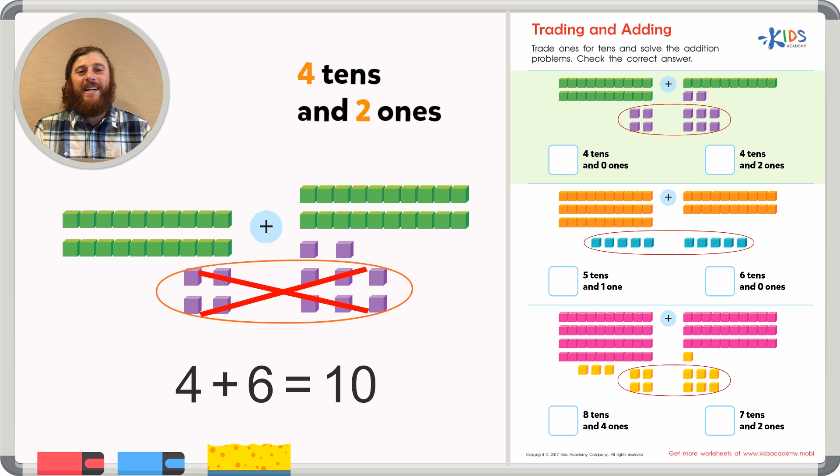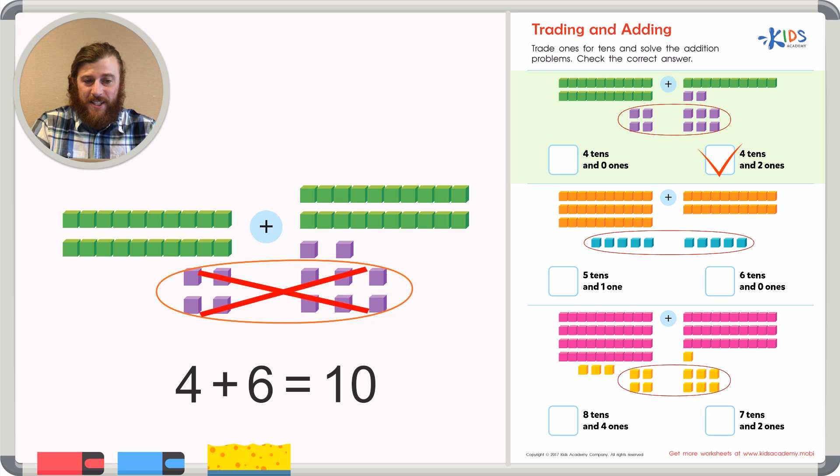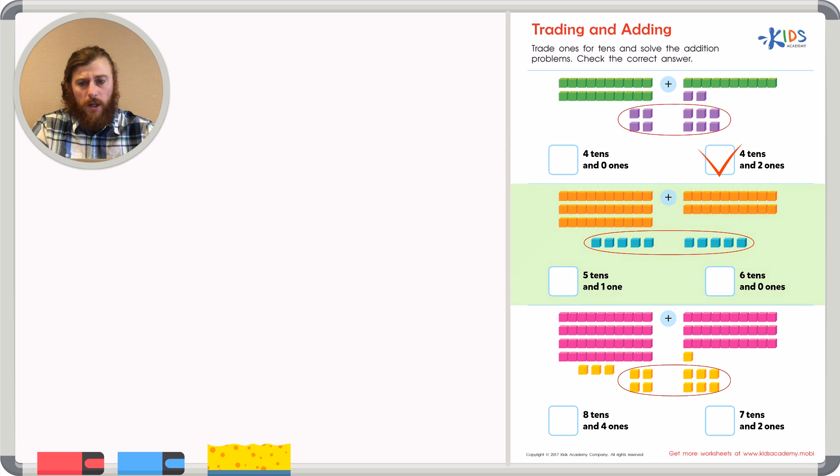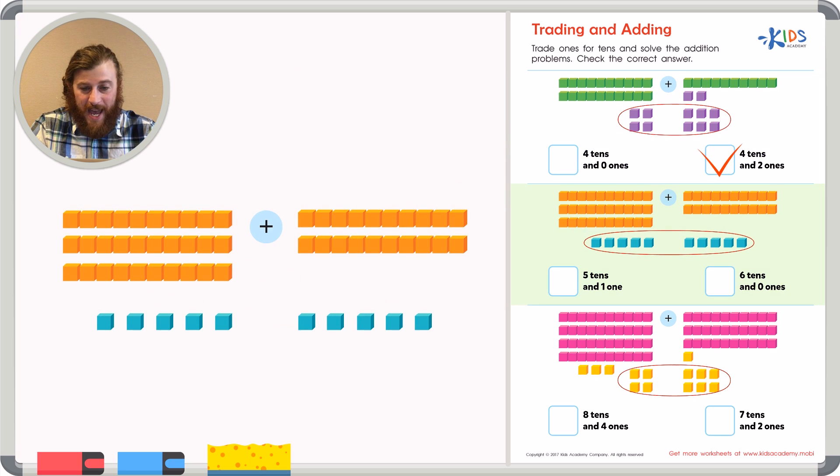The trading and adding strategy makes adding a lot easier. Let's try it again on the next example. On the next problem, I'm going to add three tens, five ones, and five ones plus two tens and five ones. First, I want to add my ones and see if I can make a ten. So I have five ones.